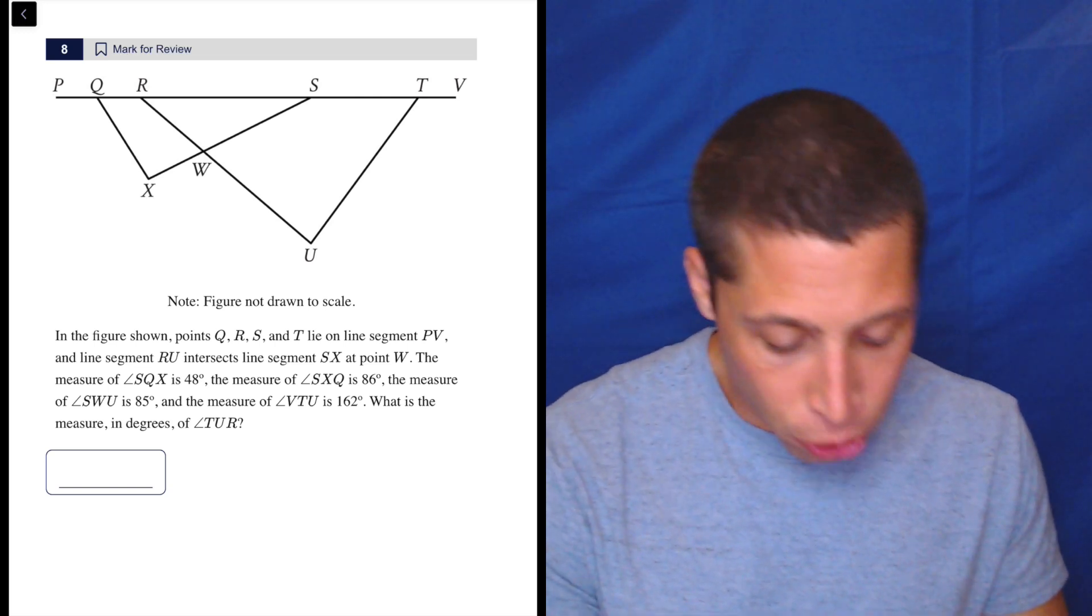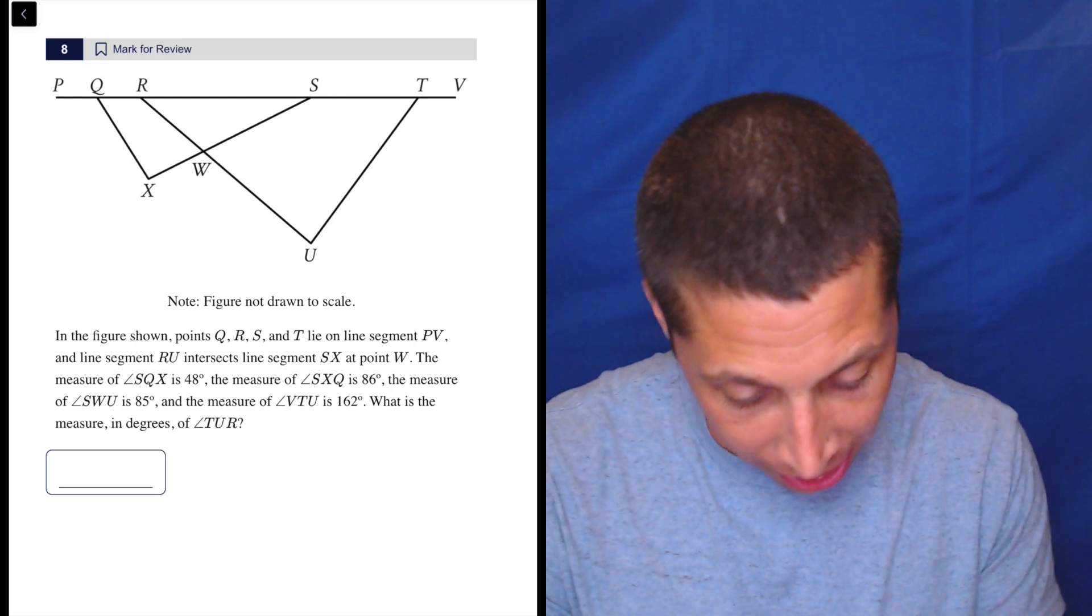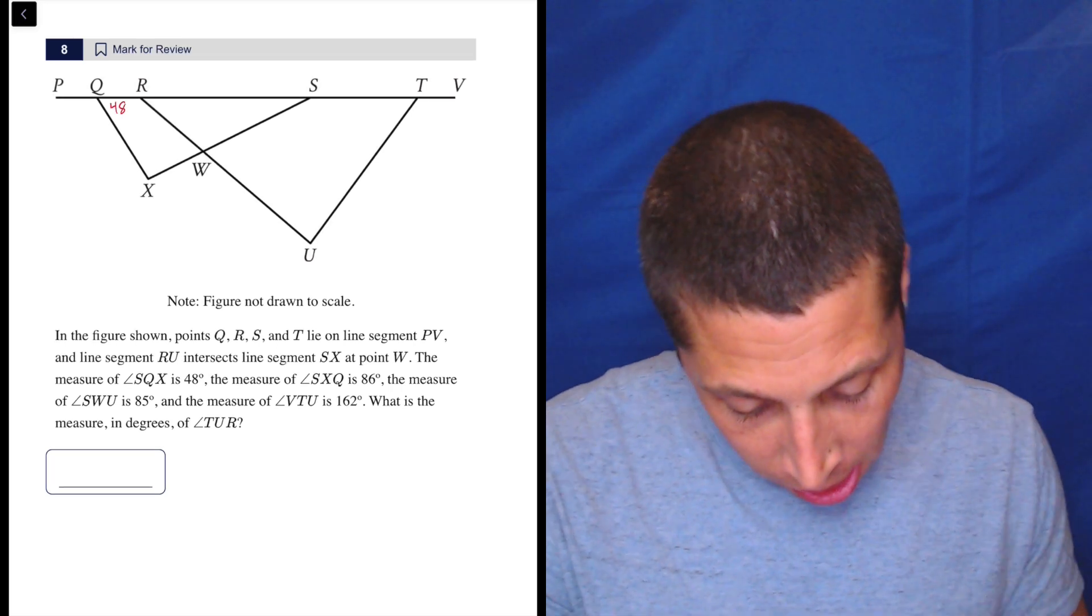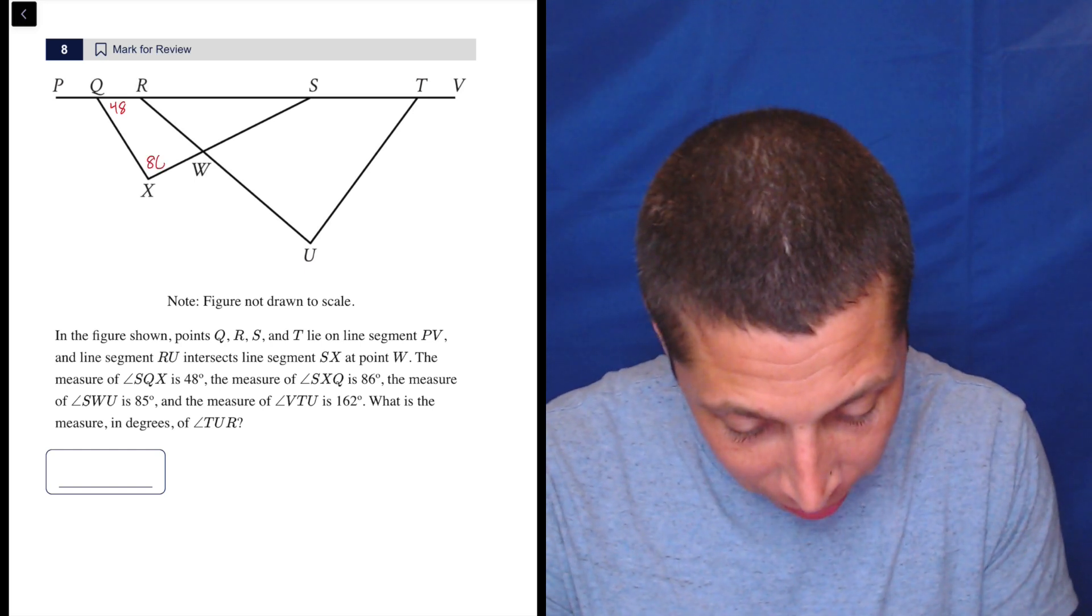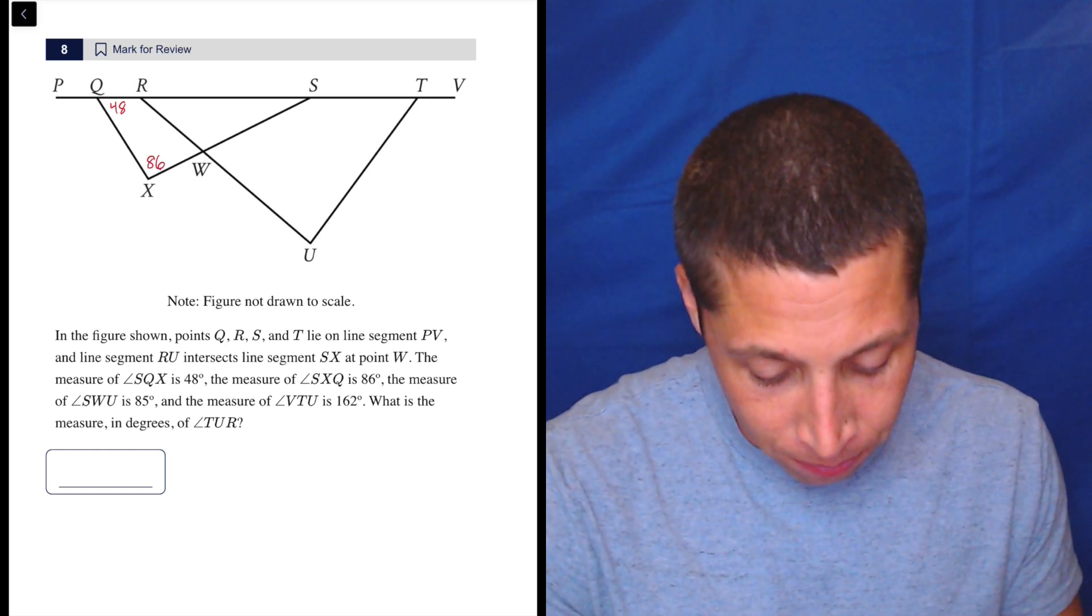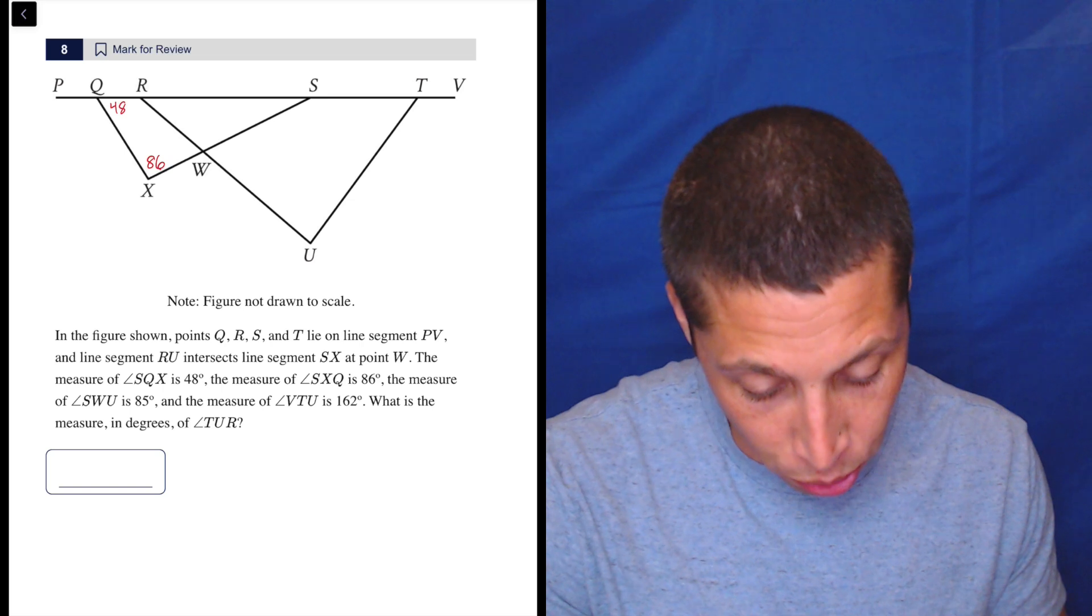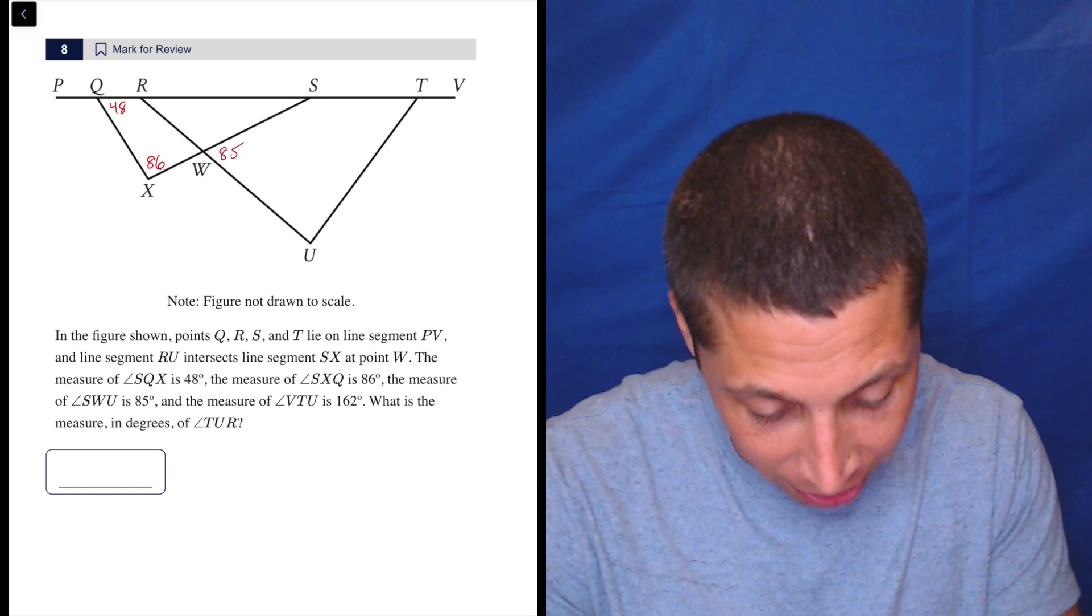The measure of angle SQX is 48. So S, Q, X is right here. The measure of S, X, Q is 86. We've got to know how to label things. The measure of SWU, so S, W, U is here, 85.